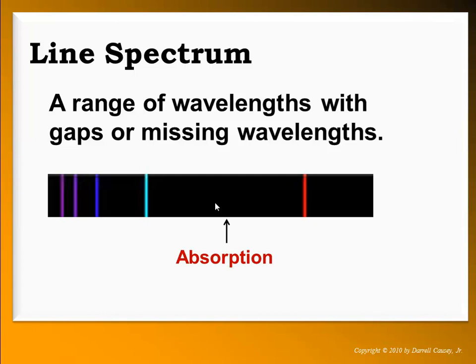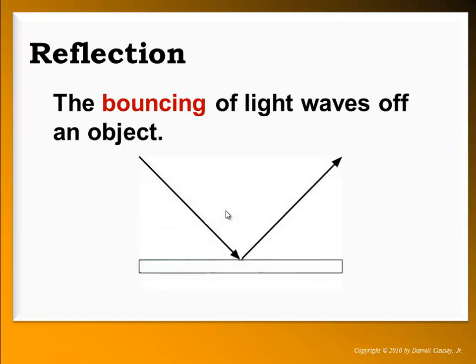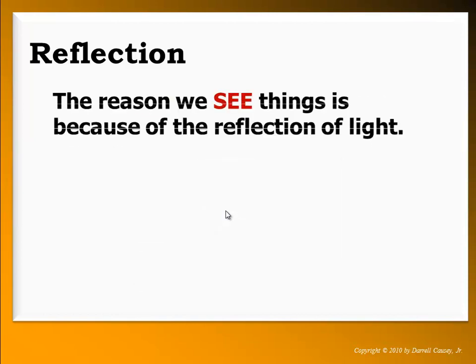Notice that the black areas are absorption and the lines are emission — that's where light is emitted. Reflection is the bouncing of light waves off an object; the light hits the object and the waves bounce back.